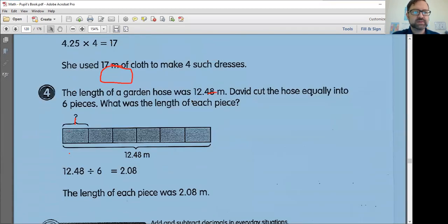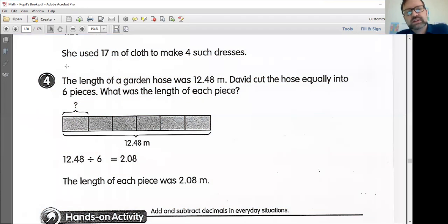And lastly, problem number four, the length of a garden hose was 12.48 meters. David cut the hose equally into six pieces. Then it says, what was the length of each piece? I am underlining this word cut. This means we're chopping it up into bits or dividing, and I'm also going to underline the word equally. This tells me I can divide it. And how much are we going to divide it by? Well, it seems like we're going to divide it into six equal pieces, and we want to know what was the length of each piece, meaning what's the length of one piece here. So this tells all of these things tell me this is a division problem.